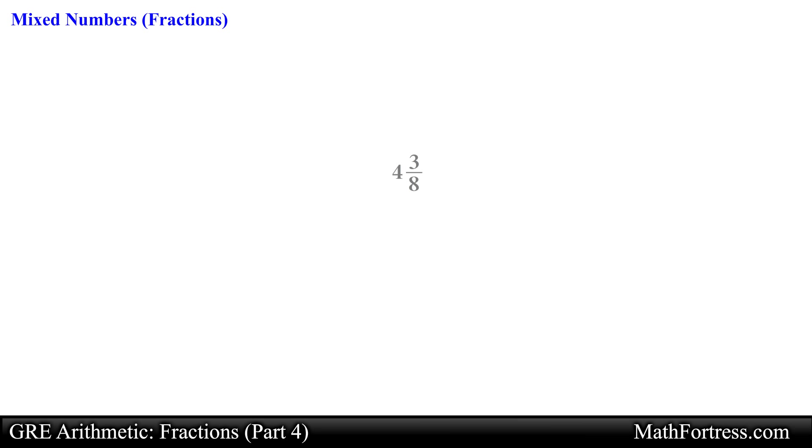An expression such as 4 and 3 eighths is called a mixed number. It consists of an integer part and a fraction part. In essence the mixed number 4 and 3 eighths means 4 plus 3 eighths.